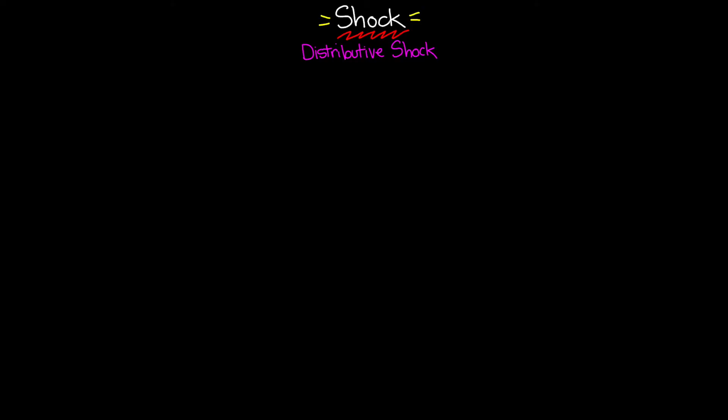When we talk about distributive shock, we're really talking about three different types of shock states: anaphylactic shock, neurogenic shock, and septic shock. Each of these types has their own causes and unique pathophysiology, but essentially the underlying cause is going to be very similar. What's going to happen in distributive shock is you're going to end up with excessive vasodilation as well as leaky blood vessels.